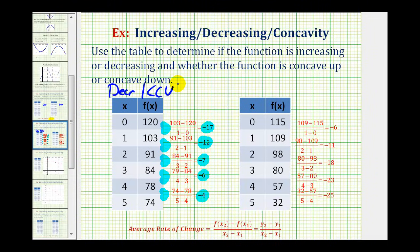Now taking a look at the second table, here are the average rates of change. They're negative 6, negative 11, negative 18, negative 23, and negative 25. These values are getting smaller, and therefore the function is concave down.